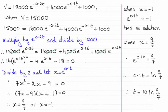Hi there. Now for this last part of the question, we had to find the exact value of t when for this equation v equaled 15,000.